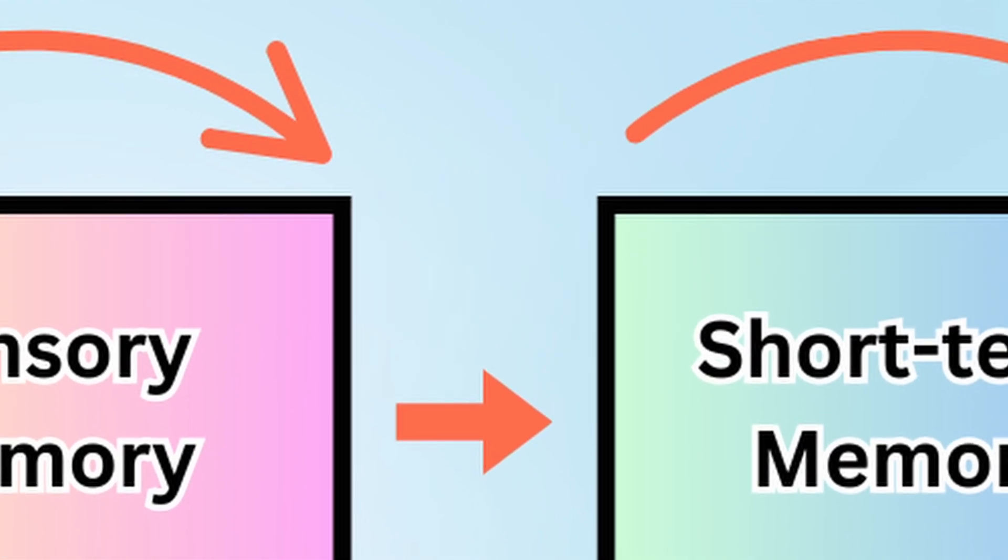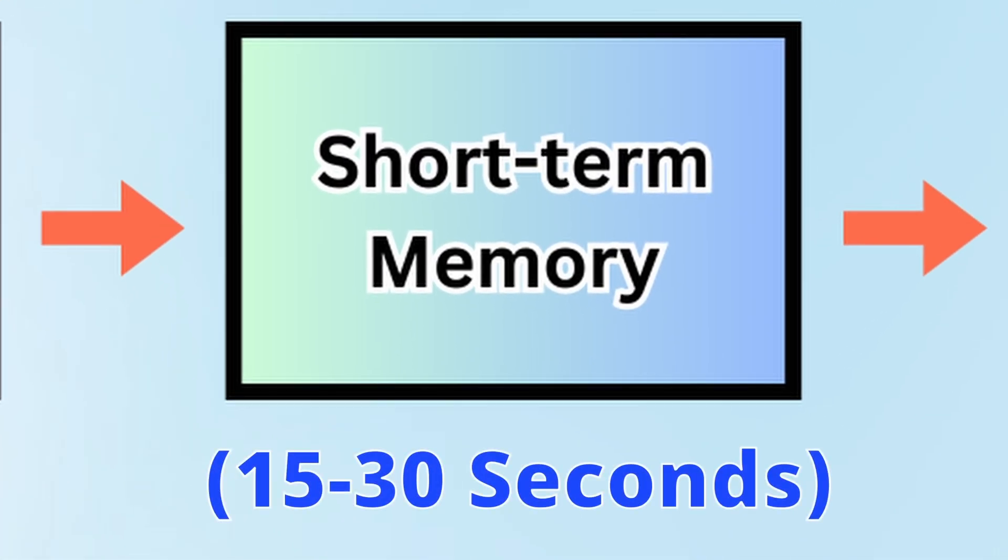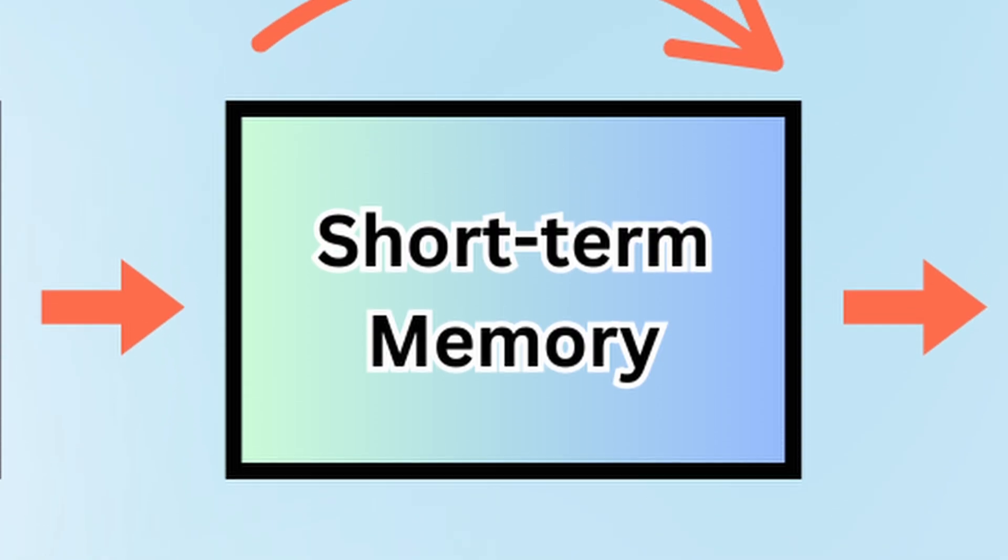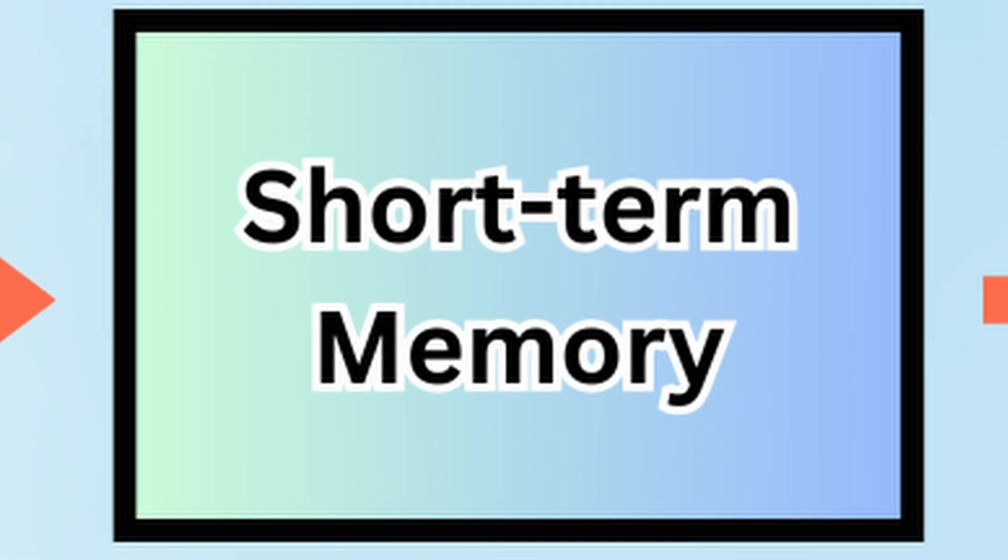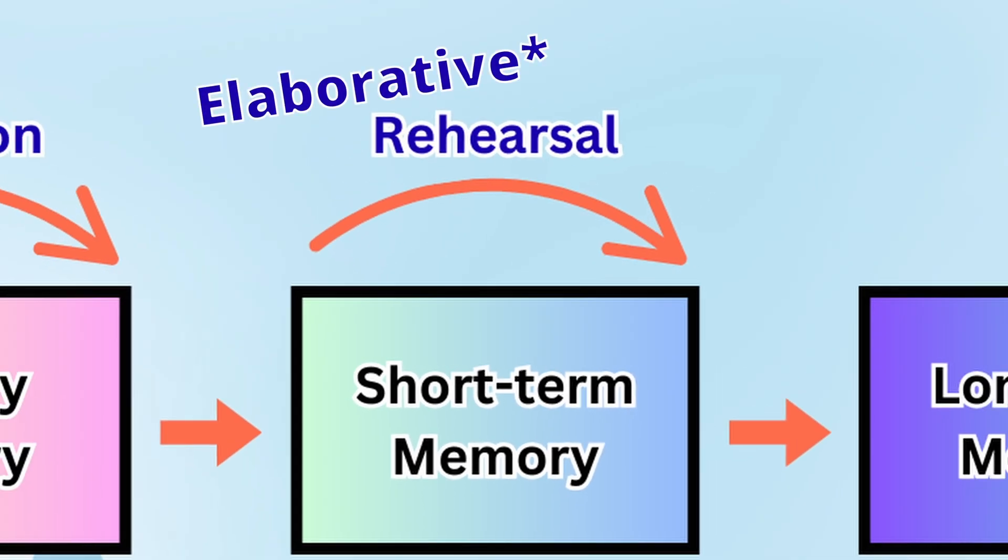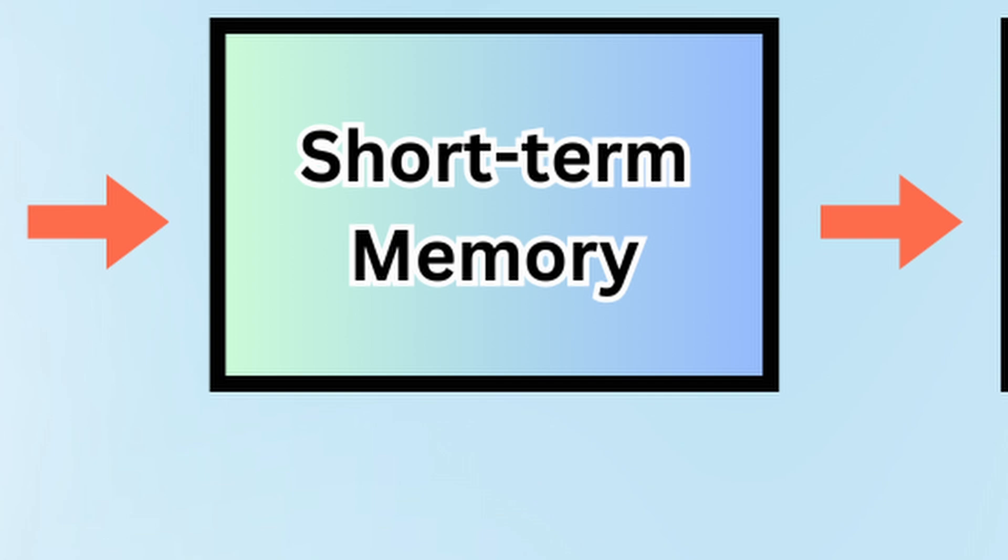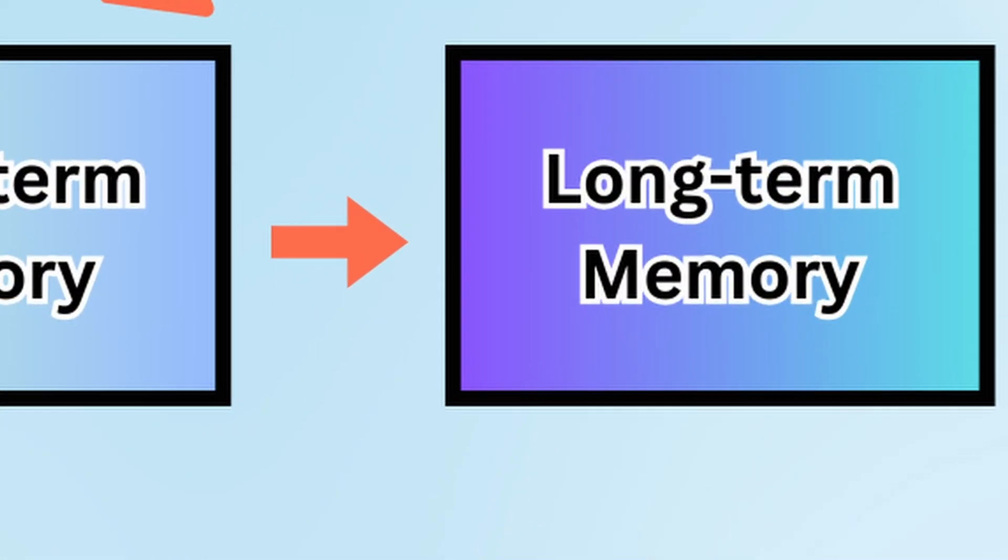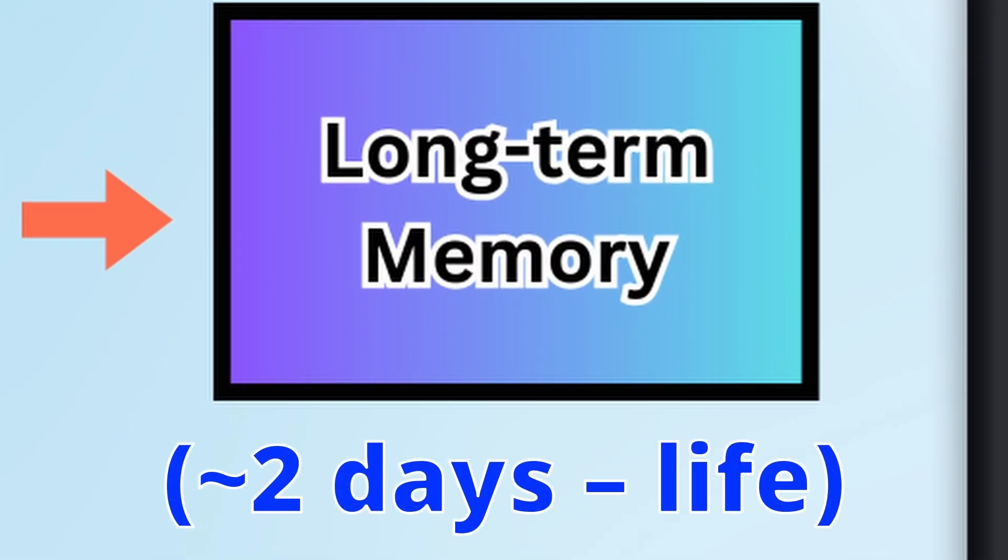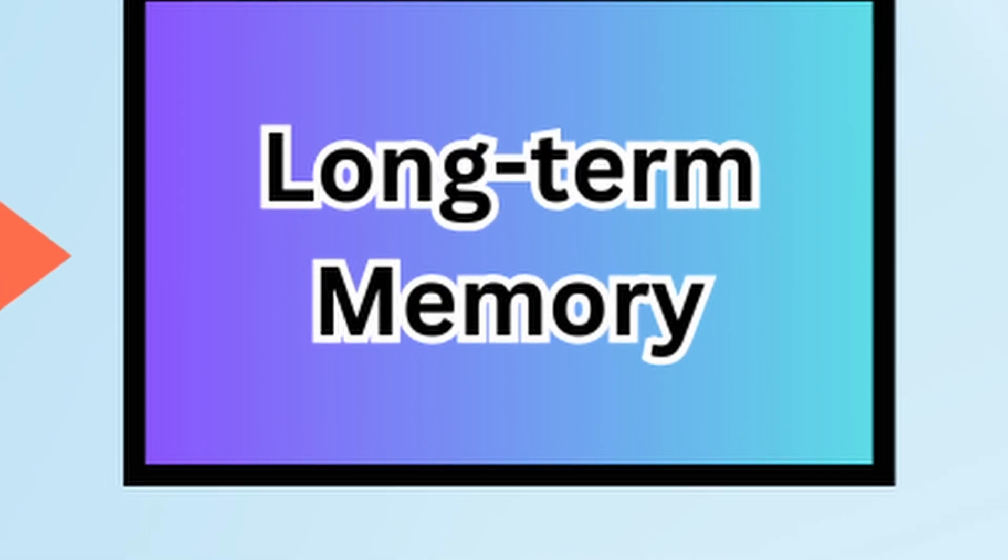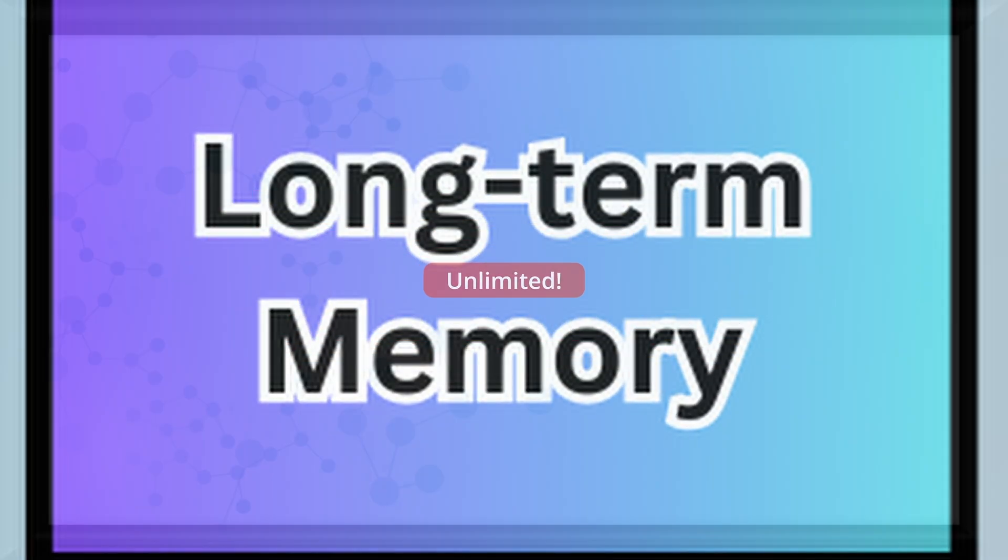Now let's move to the short-term slash working memory. We know info here lasts 15 to 30 seconds. But that number isn't ironclad. When you rehearse something here, particularly when you do maintenance rehearsal, you lengthen the amount of time information stays, until eventually you can successfully do elaborative rehearsal and bridge the gap and transfer the info into long-term memory. The other thing you could do is forget the information, but let's not talk about that. It's pretty universal that the short-term memory can hold about seven plus or minus two items in it, but that has been recently debated. Finally, the long-term memory. This one is actually quite easy. Information lasts here from a couple of days up to an entire lifetime. And believe it or not, the long-term memory is said to be virtually unlimited in its capacity.